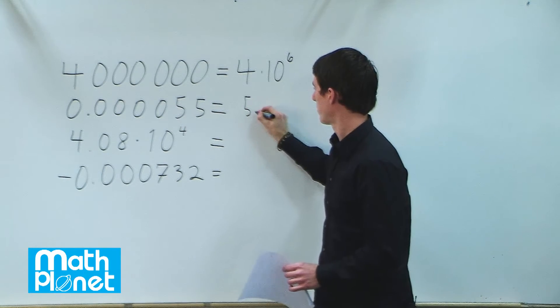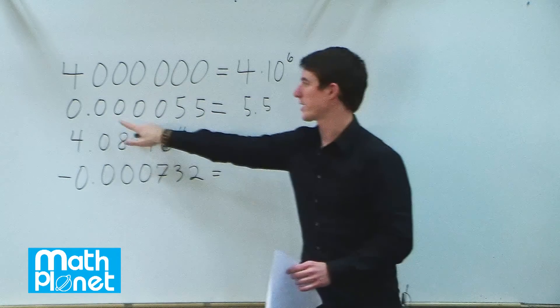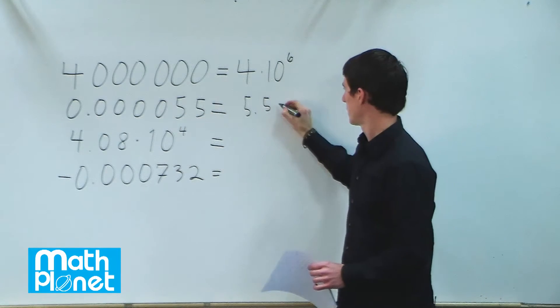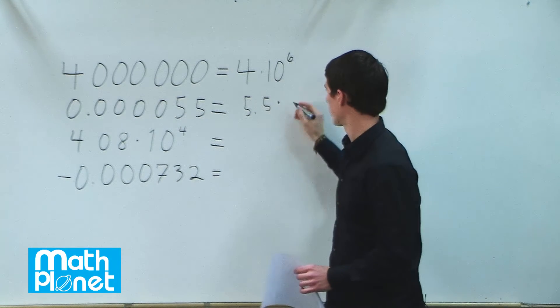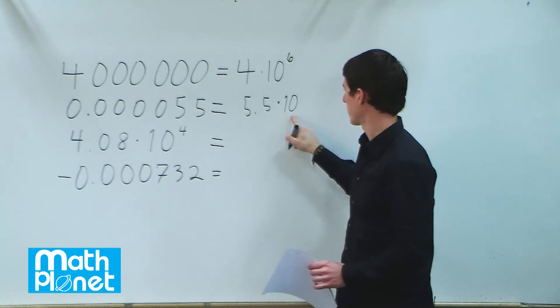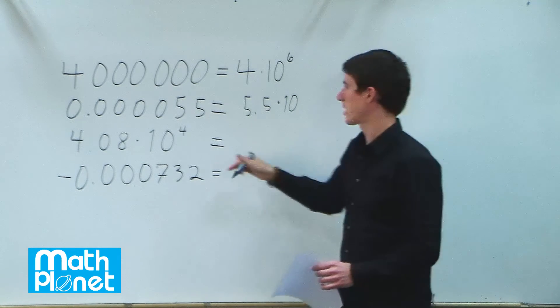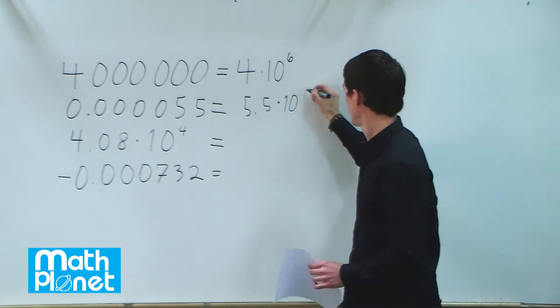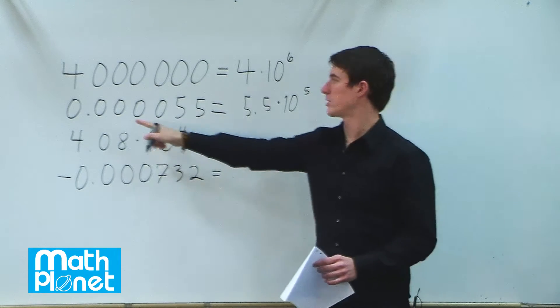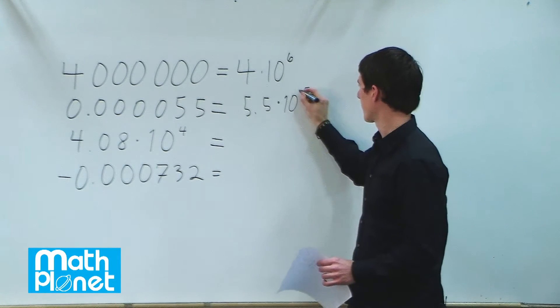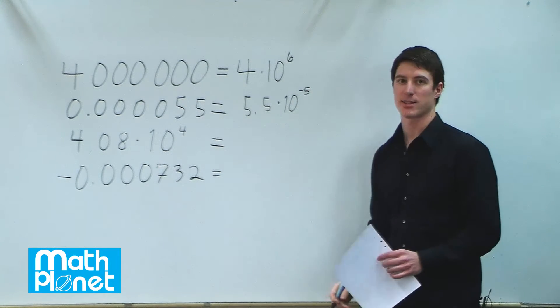So 5.5 represents this, and we need to see how many places we have to move the decimal. In scientific notation, it's 5.5 times 10 to the... 1, 2, 3, 4, 5. But since we've moved to the right, we say negative 5. So it's 5.5 times 10 to the negative 5.